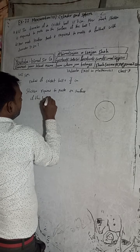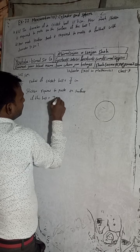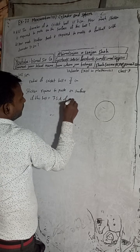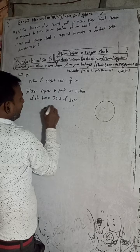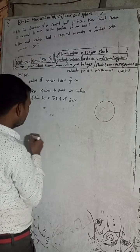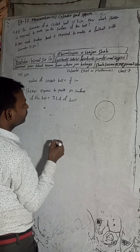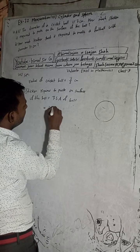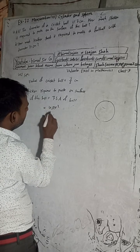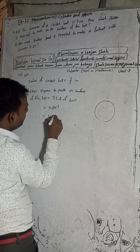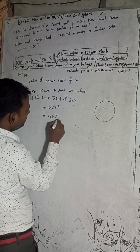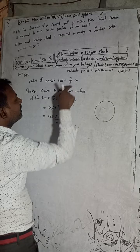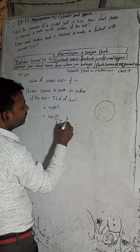The total surface area of the ball — this is a spherical shape — so total surface area of the ball will be 4πr². So this is 4 × π, where π value is 22/7, and r² where radius r is 7/2.